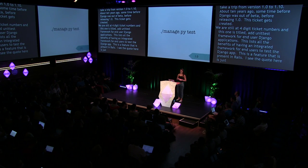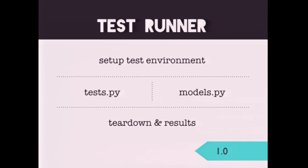That's how it all started. It started with a management command: test. The test command accepts test labels, which at the time were pseudo paths — you get app.testclass.testmethod. The test runner is a variable pointing to a function that runs the tests. Being exposed as a setting meant you could write your own test discoverer and runner. The test runner would look for tests in files named test.py and models.py only.